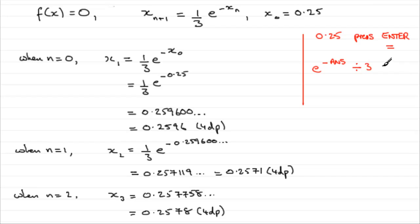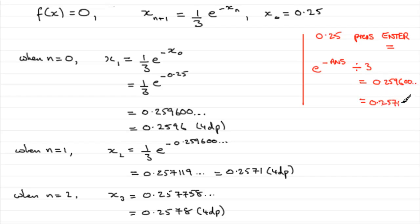Every time you press Equals after entering the formula, the calculator uses the previous result automatically. The first press gives 0.25960..., the second gives 0.257119..., and the third gives 0.257758... — so you can iterate through quickly just by pressing Equals repeatedly.